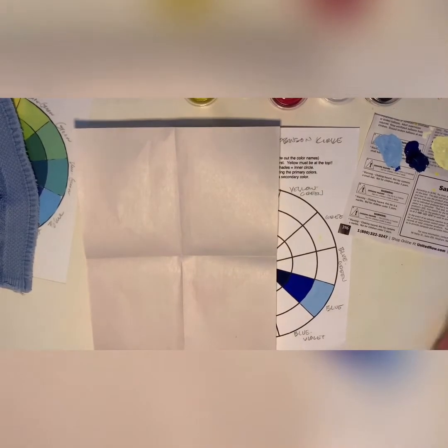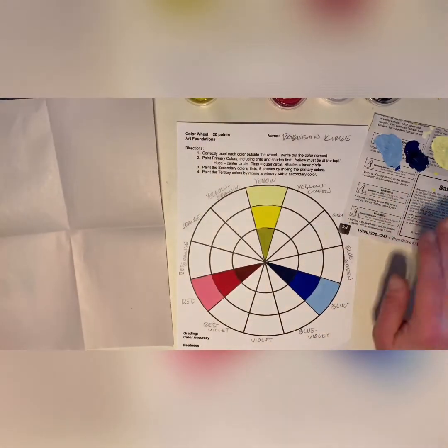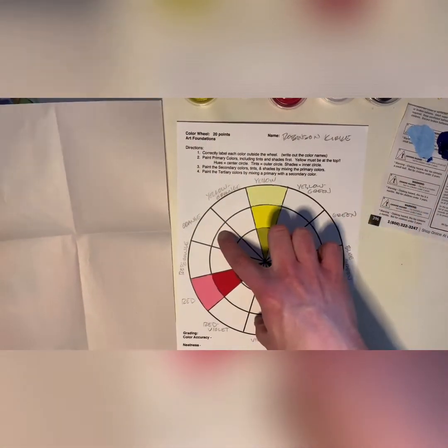Okay, now that the paint for the three primary colors is dried, we're going to take a look at doing our secondaries: our green, violet, and orange.